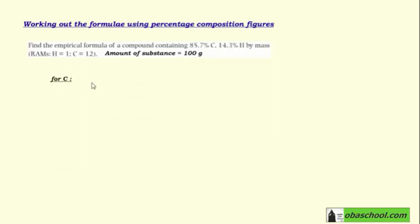For carbon, we set the amount of the entire substance as 100 grams. Carbon accounts for 85.7% of this 100%, but we want it in grams. How do we do that?